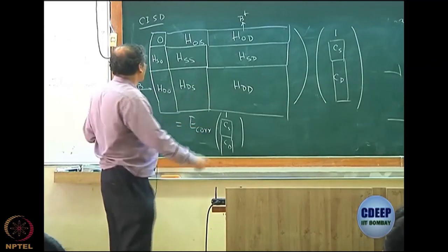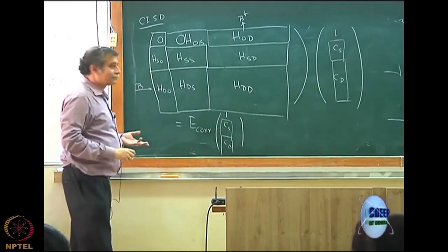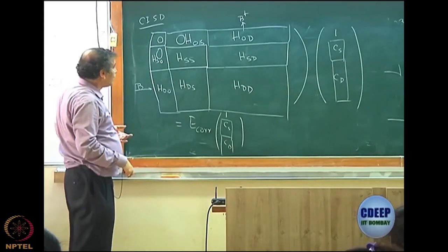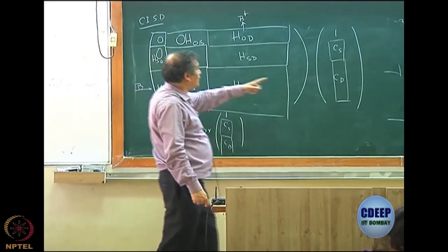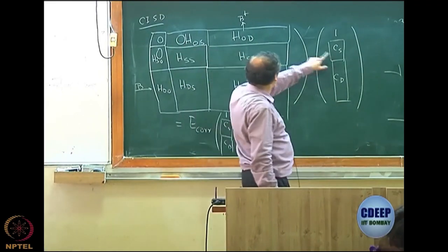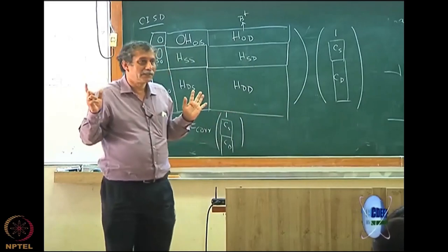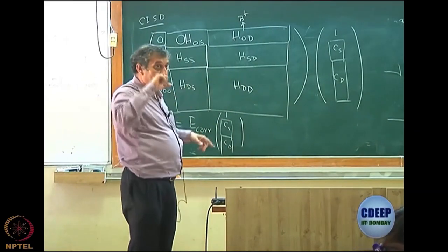So now I am going to apply Brillouin's theorem for the Hartree-Fock. So this block is also 0 and this block is also 0. So interestingly, your correlation energy remains as B dagger CD or B dagger C, because this is 0. So 0 times this is 0. So this is all the correlation. So correlation energy does not change. Is it clear? Because of Brillouin's theorem.